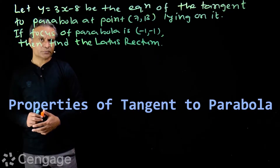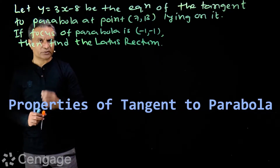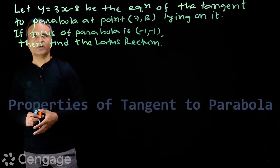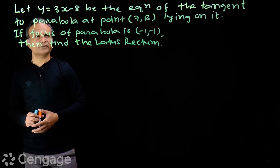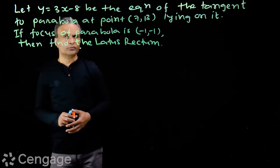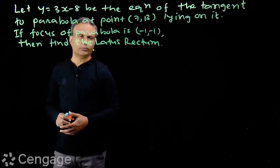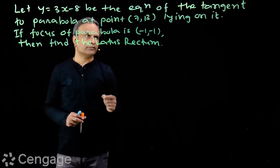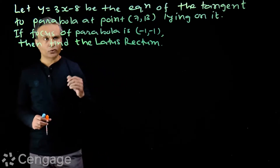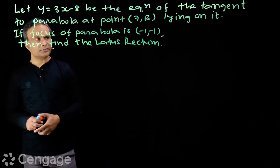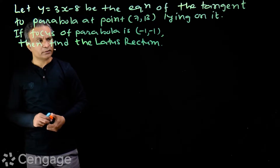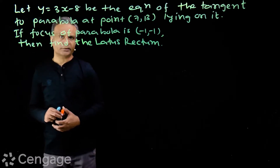Now let us have some questions based on properties of tangent. Here we have a question: let y = 3x - 8 be the equation of the tangent to a parabola at the point (7, 13) lying on it. If the focus of the parabola is (-1, -1), then find the length of the latus rectum.